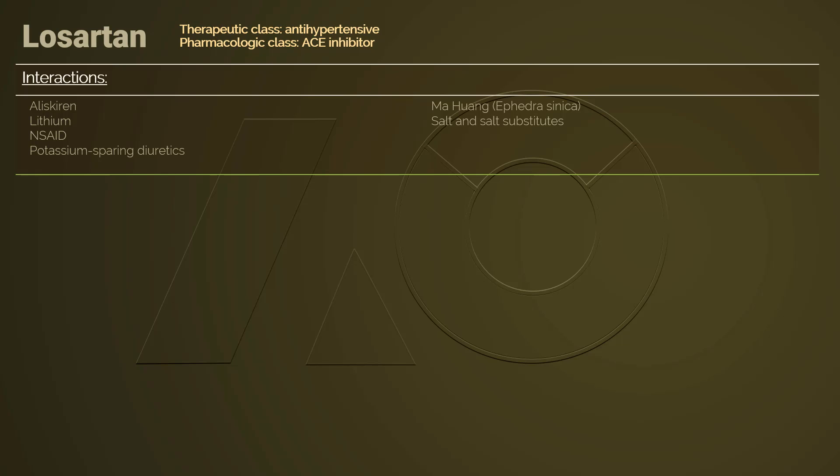Ma huang (Ephedra sinica) increases blood pressure and heart rate, which can compromise the antihypertensive effect of Losartan. This herb should not be used while the patient is on Losartan. Patients should also be taught to use salt substitutes carefully to prevent hyperkalemia.